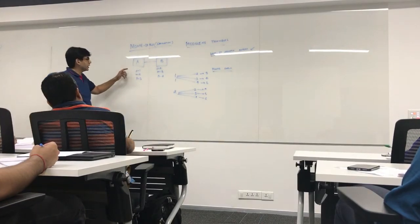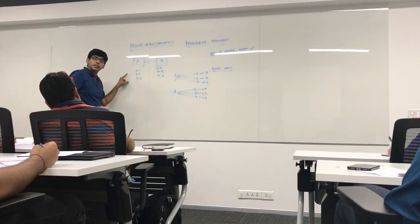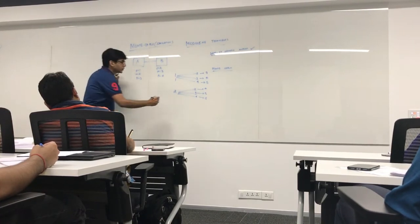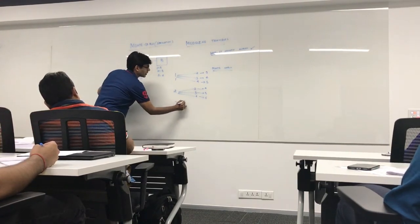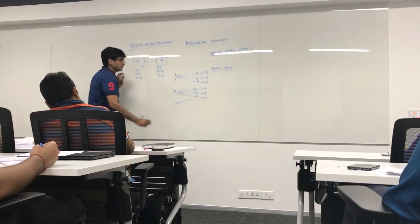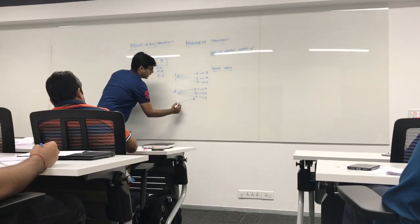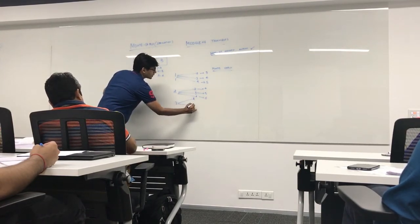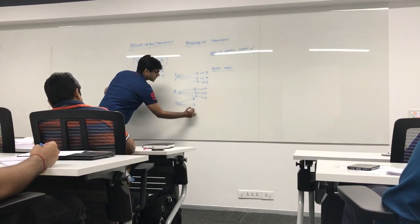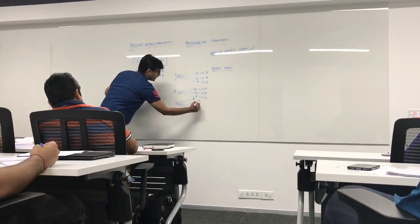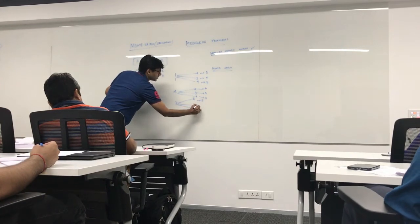Now the third scenario could have been A getting completed in the worst case scenario or pessimistic, 3 days. B getting completed in optimistic. Again B getting completed in most likely and then B getting completed in the worst case scenario. What are the durations we get? 5, 6 and 7.